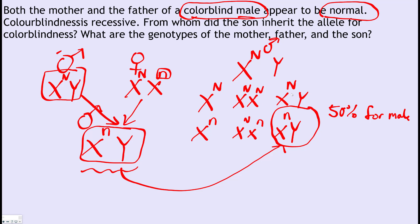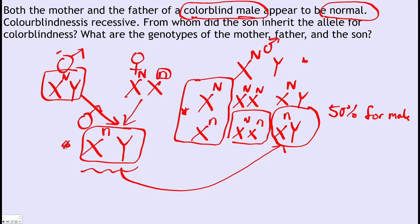Looking at the male offspring only, there's a 50% chance of a son being colorblind, not one in four, because there are only two XY combinations. For females, there's a 0% chance of colorblindness but a carrier female is possible. So the son inherited the colorblindness allele from the mom, the mother's genotype is heterozygous carrier, the father's is XNY, and the son's is XnY.